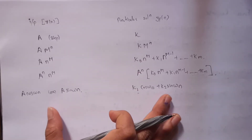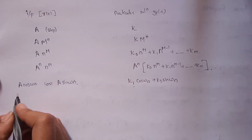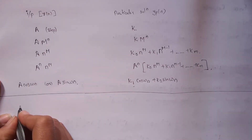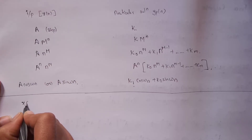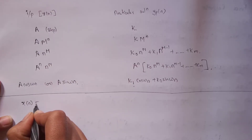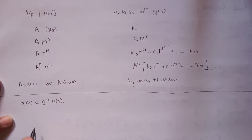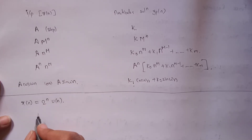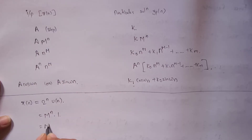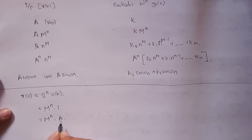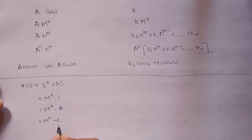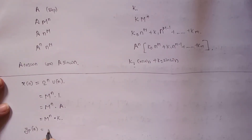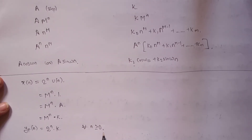Now let's find the particular solution for our question. The input x of n equals 2^n * u(n). This matches the form m^n, so the particular solution is y_p of n = k * 2^n, valid for all n greater than or equal to zero. We now need to find the value of k.